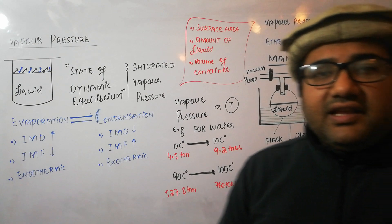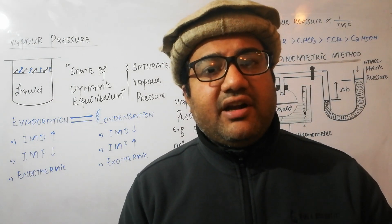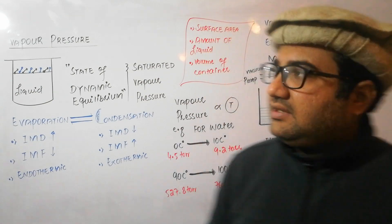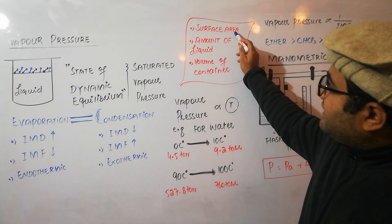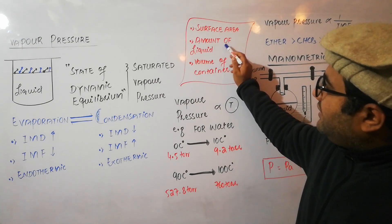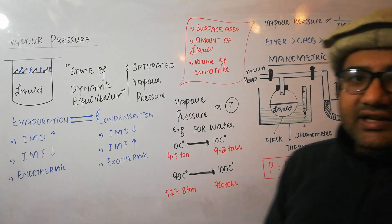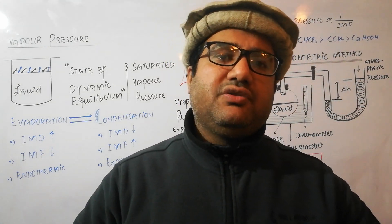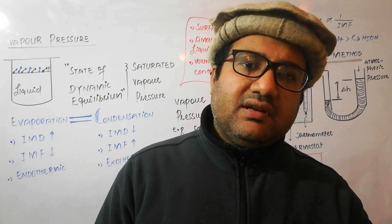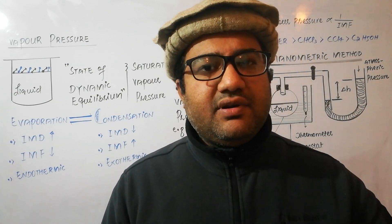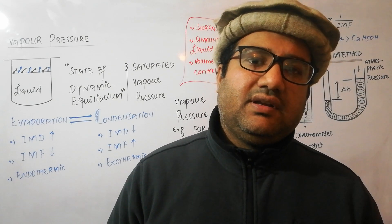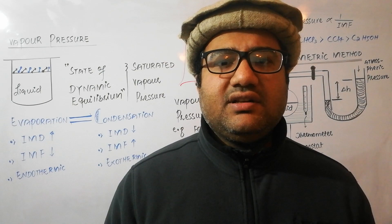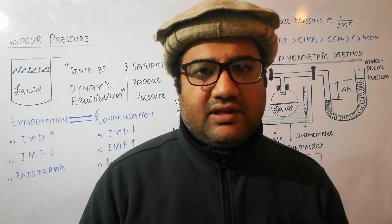There are three factors that affect the rate of evaporation but do not affect the vapor pressure. Number one is surface area, number two is the amount of liquid, and number three is the volume of the container. These three factors give equal opportunity to molecules for their escape and re-entry, so there is no effect on the vapor pressure.